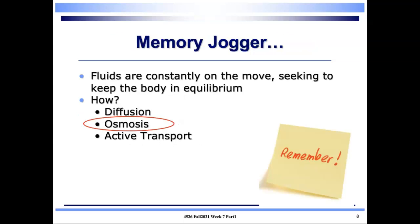Fluids are constantly on the move seeking to keep the body in equilibrium through three ways: diffusion, osmosis, and active transport. Diffusion is the movement of solutes from areas of high concentration to areas of lower concentration — the membrane is permeable to water and solutes and requires no energy. Facilitated diffusion uses a transporter. Osmosis is the diffusion of water molecules from low to high solute concentration because the membrane is not permeable to solutes. Active transport requires energy to pump uphill against the concentration gradient, as seen with the sodium-potassium pump.